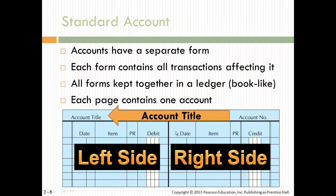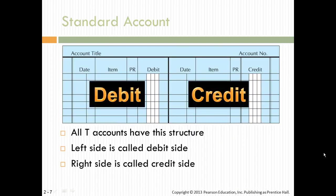The account title has a left side and a right side, which is going to become important for the T-account. The T-account is basically the account title with a big T and a left and a right side. All T-accounts have this structure. The left is the debit, the right is the credit, no matter what the normal balance of an account is.